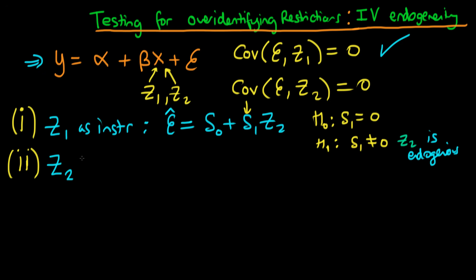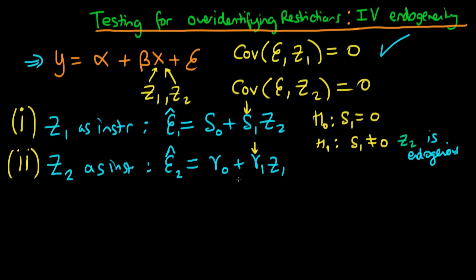We could also do this test the other way around: perform two-stage least squares using z2 as an instrument, get out the estimated errors, then run a regression of those on z1, and test whether gamma_1 is statistically different from zero — in other words, whether z1 is endogenous. But again, in order to conclude whether z1 was endogenous, we needed to assume that z2 was itself exogenous, and in principle we don't know which way around these two things should be.